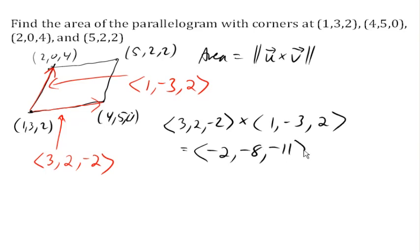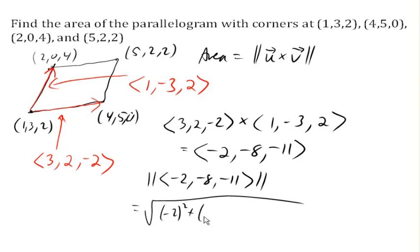And then we need the magnitude of that vector. So we need the magnitude of this vector, which will be the square root of negative 2 squared plus negative 8 squared plus negative 11 squared.